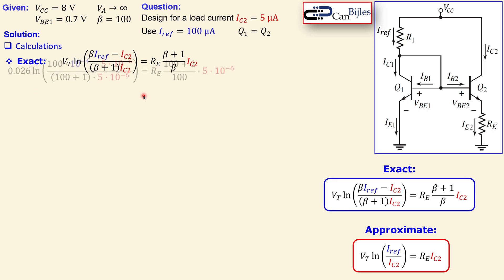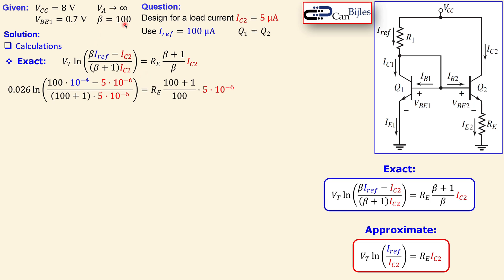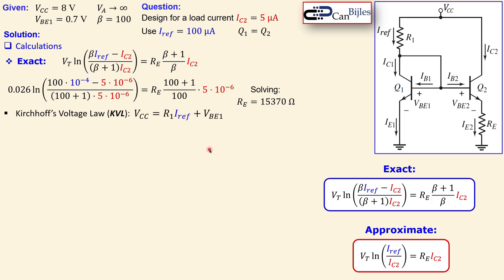Using the exact formula and substituting β = 100, IRF = 100 µA, IC2 = 5 µA, and VT = 26 mV, we solve for RE and get 15,370 Ω. For R1, applying Kirchhoff's voltage law and solving gives R1 = 73 kΩ.